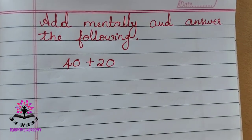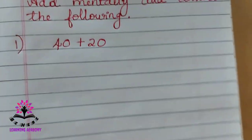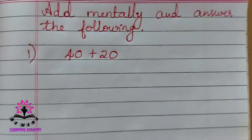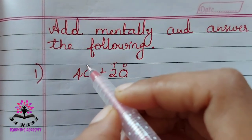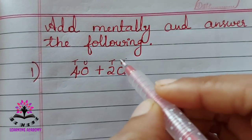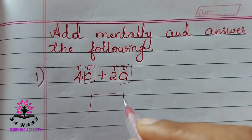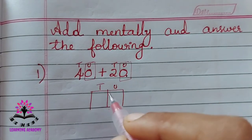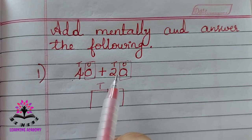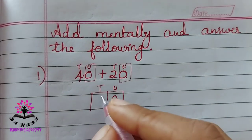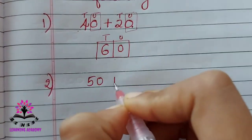Now add mentally and answer the following. The first problem is 40 plus 20. You see there is zero in the unit place for both numbers. So in the answer, write zero in the unit place. Then add the numbers in the tens place: four plus two. After four — five and six — so it will be 60.